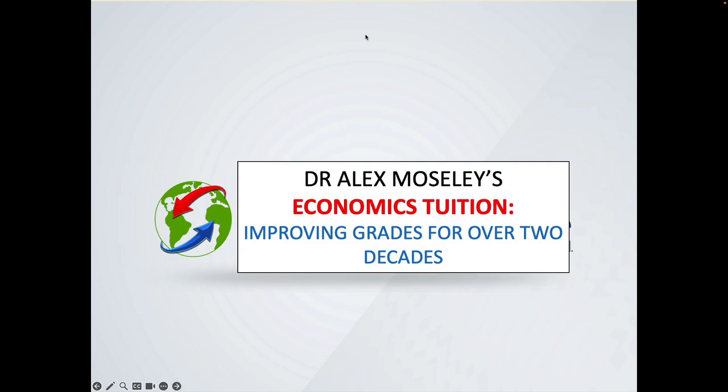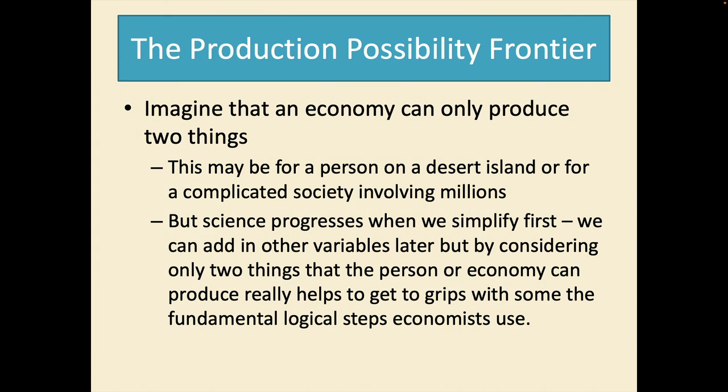Hello there and welcome to a tutorial on the production possibility frontier. Imagine that an economy can only produce two things. Now this may be for a person on a desert island or for a complicated society involving millions.